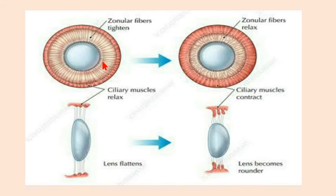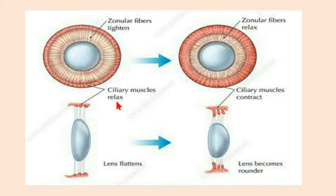When the lens flattens, it is because the ciliary muscles relax and the suspensory ligaments tighten. Suspensory ligaments are also known as zonular fibers. So when ciliary muscles relax and zonular fibers tighten, the lens becomes flatter in shape — also called elongated or thinner in shape.